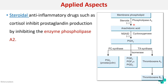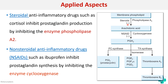Remember that prostaglandin is a main cause of pain and inflammation. We have two classes of drugs to stop this pain: steroids, which inhibit phospholipase A2 thereby decreasing prostaglandin synthesis, and NSAIDs — non-steroidal anti-inflammatory drugs such as ibuprofen — which inhibit prostaglandin synthesis by inhibiting cyclooxygenase. These are the applied aspects of prostaglandins. I hope this quick review of the local hormone prostaglandins has been useful. Thank you.